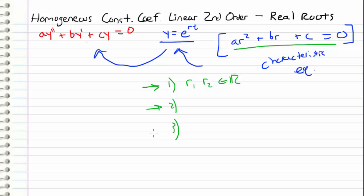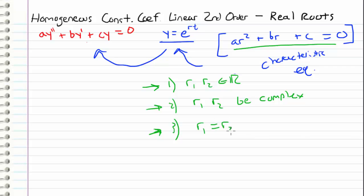In the next videos — just to keep them in mind — we're going to let r1 and r2 be complex numbers, meaning they have an imaginary component. And then finally, in the third case, r1 is equal to r2. There's going to be a special way that we handle this, which we will take a look at in a later video after we review cases one and two.